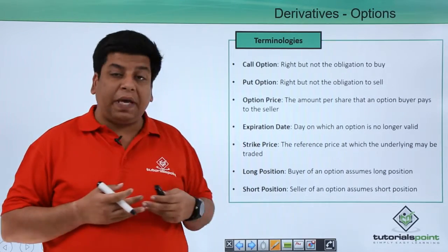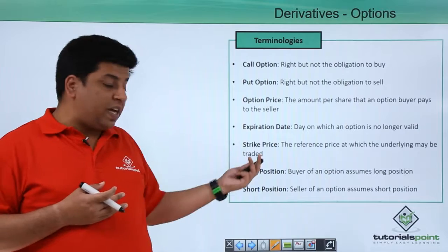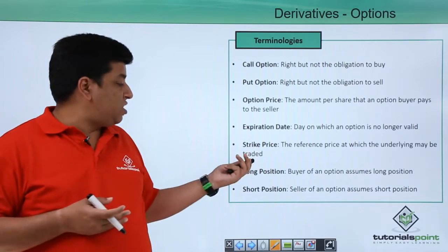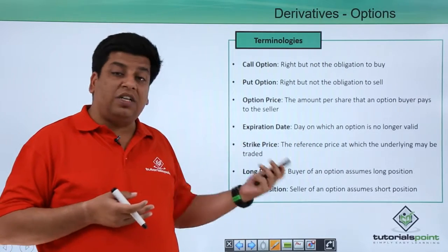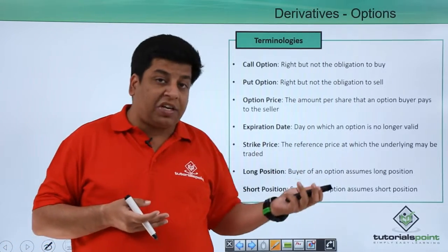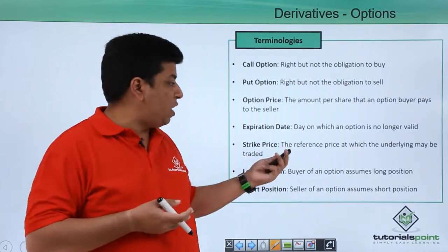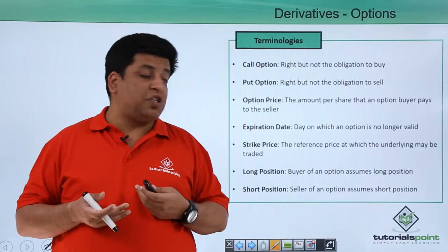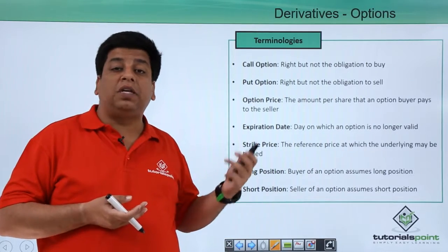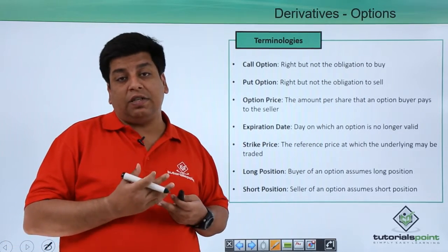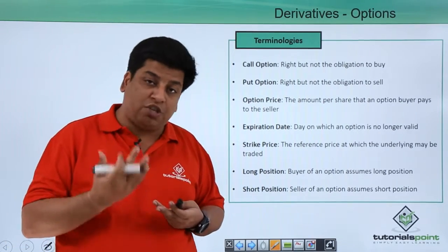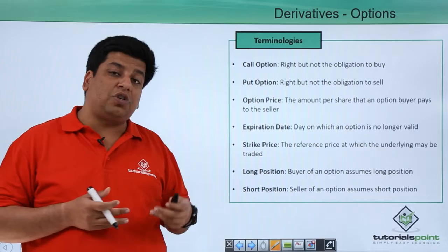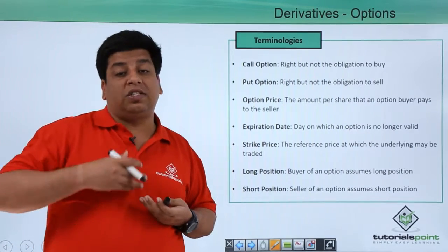Other important terminologies: option price is the amount per share that an option buyer pays to the seller. Expiration date is the day on which the option is no longer valid. Strike price is the reference price at which the underlying asset may be traded — we say 'may be' because it is a right but not an obligation. Long position is assumed by the buyer of an option, and short position is assumed by the seller of an option.